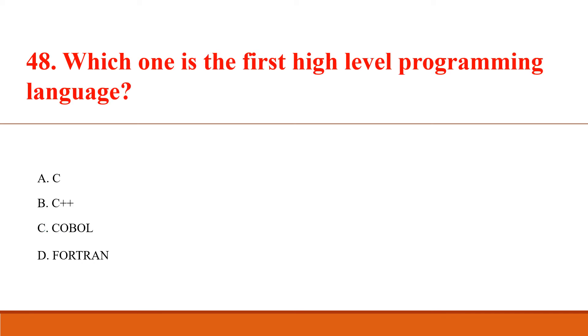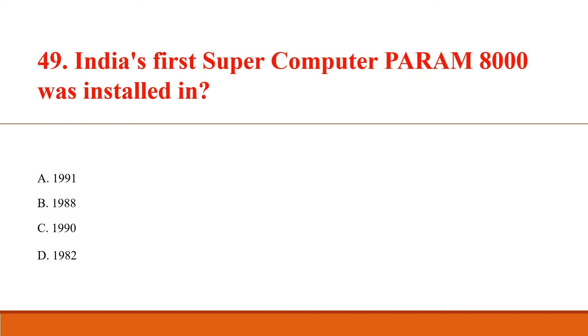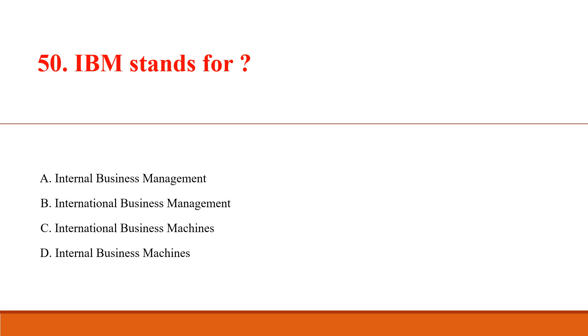Which one is the first high level programming language? Answer Option D: Fortran. India's first supercomputer Param 8000 was installed in? Answer Option A: 1991. IBM stands for? Answer Option C: International Business Machines.